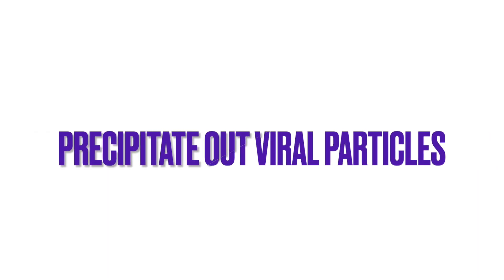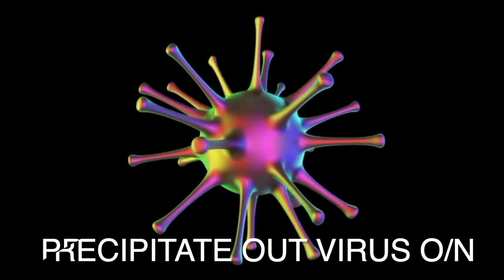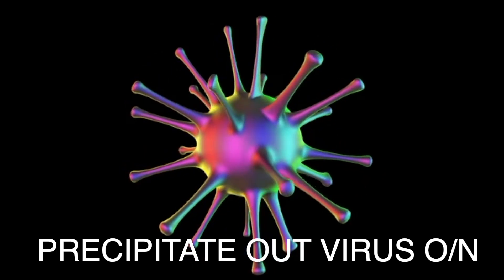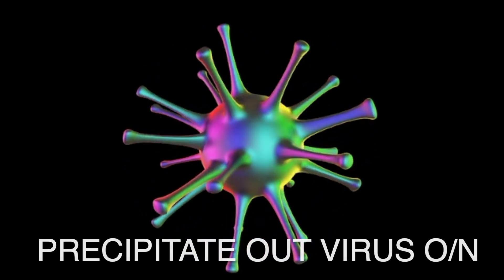Now that we have removed all the free nucleic acids, we are going to pellet out the viral component. If you do not have ultra-centrifugation equipment, you can precipitate it out using sodium chloride and polyethylene glycol (PEG). Allow the precipitation of the viral components to occur overnight at 4 degrees Celsius.